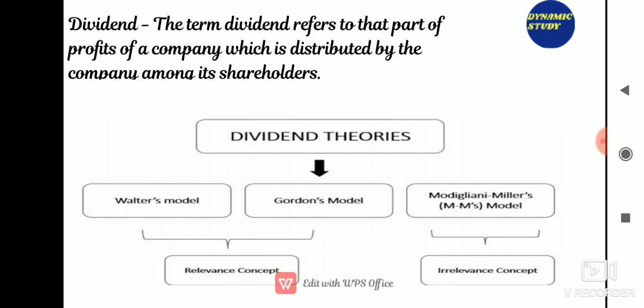Relevant concept of dividend: according to this school of thought, dividends are relevant and the amount of dividend affects the value of the firm. Walter and Gordon assume that dividend decisions are relevant in influencing the value of the firm. Irrelevant concept of dividend, propounded by Modigliani and Miller in 1961: they assume dividend policy is irrelevant and does not affect the wealth of shareholders. They argue that the value of the firm depends on the market price of shares, and dividend decisions are of no use in determining the value of the firm.